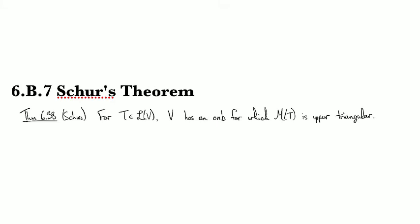In this clip we're going to prove Schur's Theorem, which is basically the orthogonalization of this result that we have for upper triangular matrices. We've seen before that there's always a basis for which an operator has an upper triangular matrix, and now we're just going to add that there's always a basis which is orthonormal for which the matrix is upper triangular.